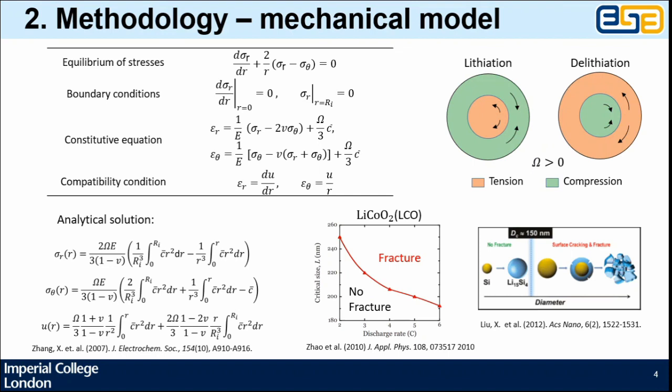In literature, it also shows ways to avoid particle cracking, either decrease the particle size or decrease the discharge currents. For silicon particles, from experiments, there is also a critical particle size below which there would be no fracture.